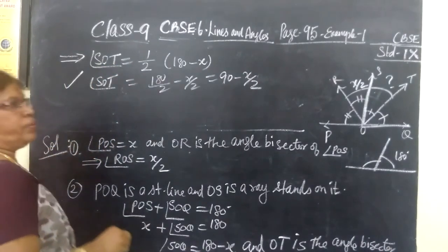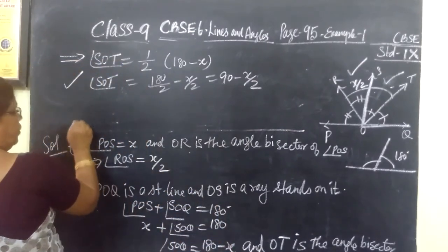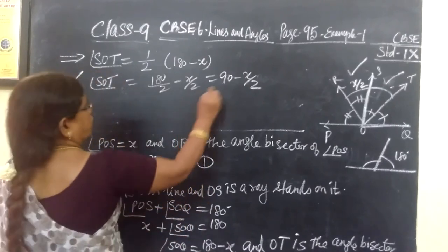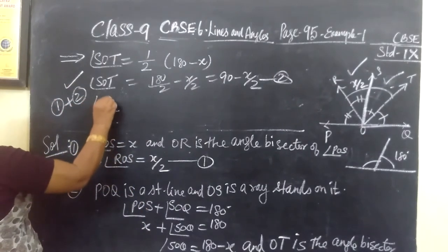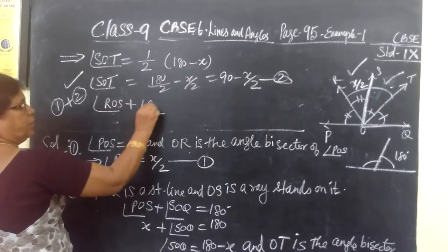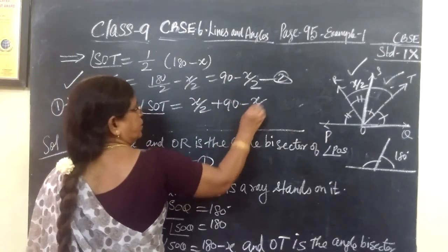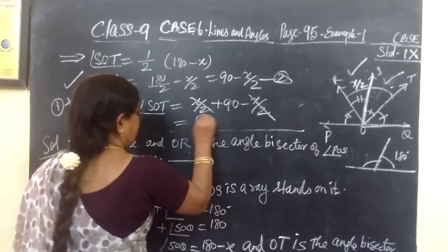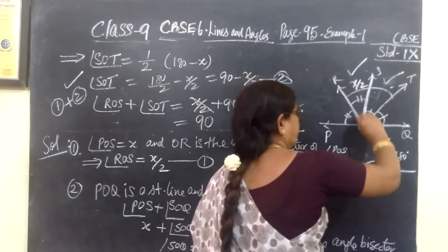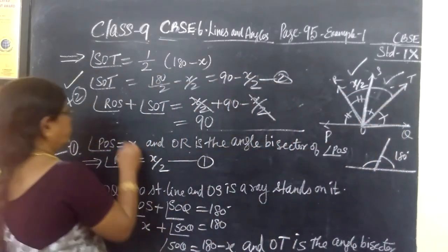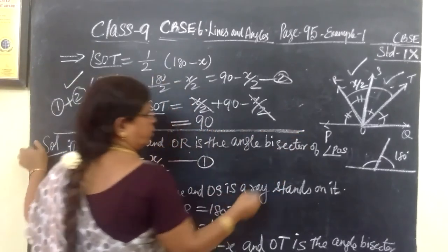So we have found angle SOT. This we have found. This already we know. So if we add these two you get the answer. Now you mark this as 1 and this as 2. So from 1 plus 2, ROS plus SOT equal to X by 2 plus 90 minus X by 2. This and this cancel. So this is 90. So if you add ROS plus SOT, this gives the whole angle ROT. So ROT equal to 90. So this is the answer for this problem.